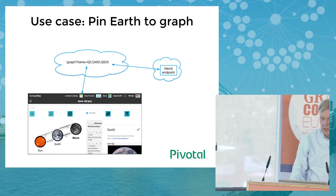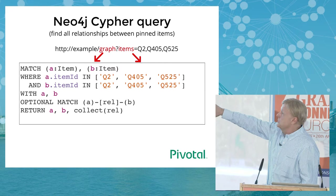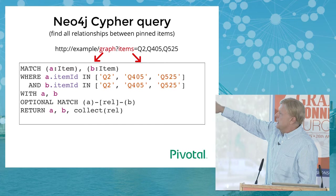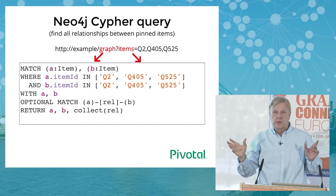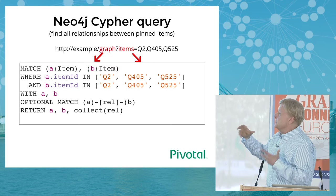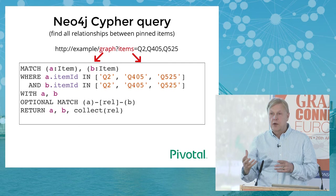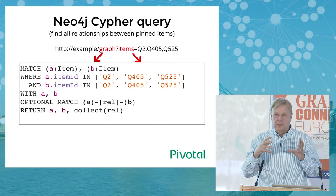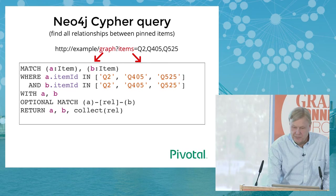The Neo4j Cypher query is quite simple: match on labels A and B, where item IDs are in the list of pinned items, do an optional match, then return A, B, and collect(rel). That way we return all the nodes and relationships for our concept map — nothing more, nothing less.